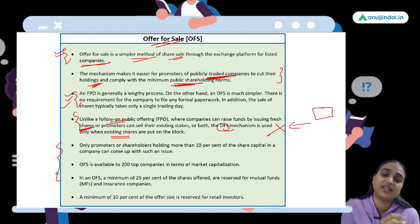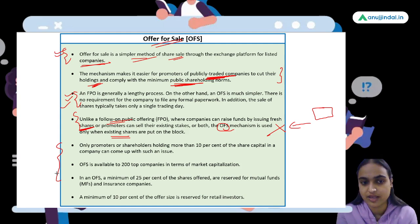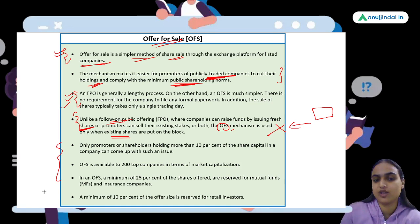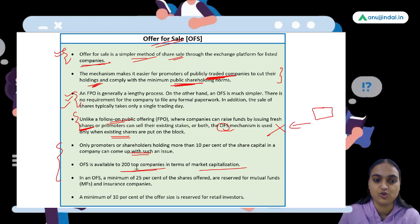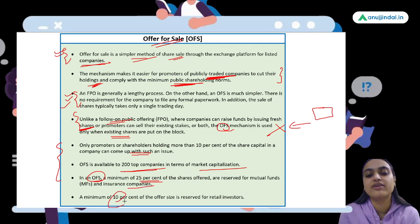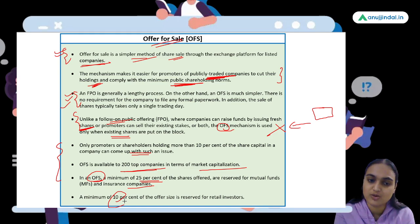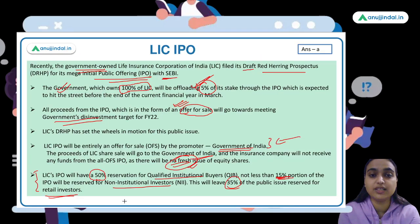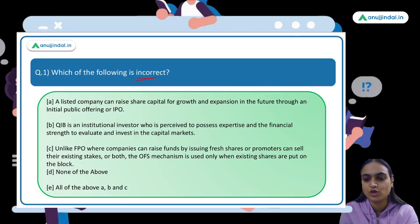Not all companies that can do an FPO can necessarily do an OFS. Only those promoters or shareholders who have more than 10 percent share capital can make an Offer for Sale, and only the top 200 companies based on market cap can make such an issue. If an OFS is happening, 25 percent of minimum shares will be offered to mutual funds and insurance companies, and 10 percent to retail investors.